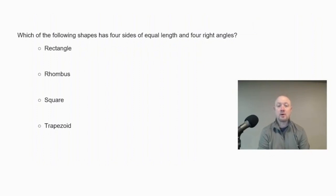Which of the following shapes has four sides of equal length and four right angles? Is it a rectangle, a rhombus, a square, or a trapezoid? Our four choices here, each one of these has four sides, so each one is a quadrilateral.